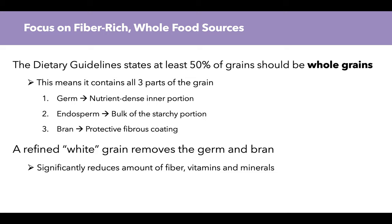For recommendation one — focus on fiber-rich whole food sources. Whole foods are foods closest to the natural source, so minimally processed. The dietary guidelines state that at least 50% of grains should be whole grains. A whole grain contains all three parts: the germ, which is the nutrient-dense inner portion; the endosperm, the starchy portion; and the bran, the protective fibrous coating. Refined white grain removes the germ and the bran, reducing the fiber content as well as the amount and diversity of vitamins and minerals.